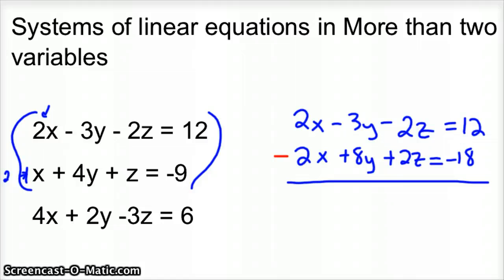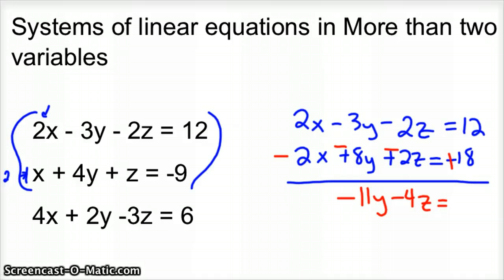So just change your signs all the way across. And when you do that, you end up with negative eleven y, minus four z, equals thirty. And so now we've got an equation with just two variables, a y and a z.